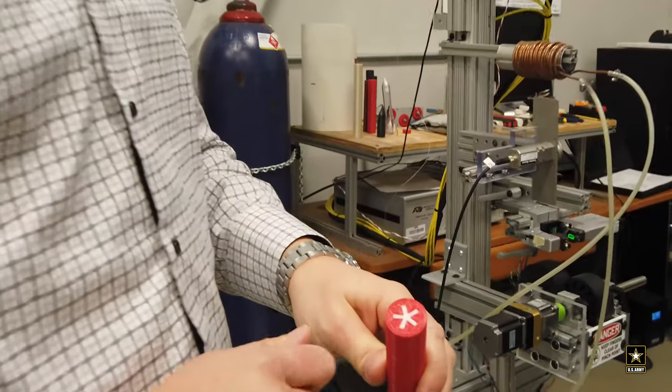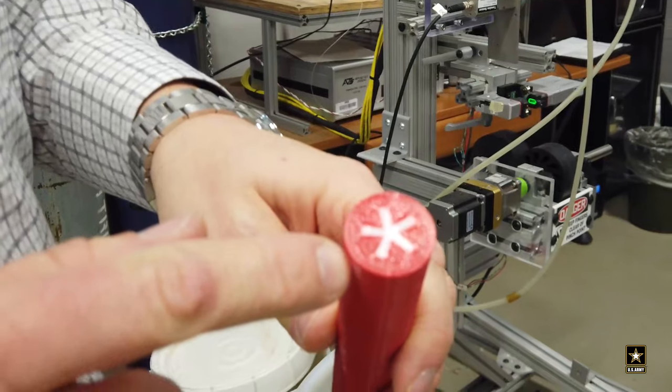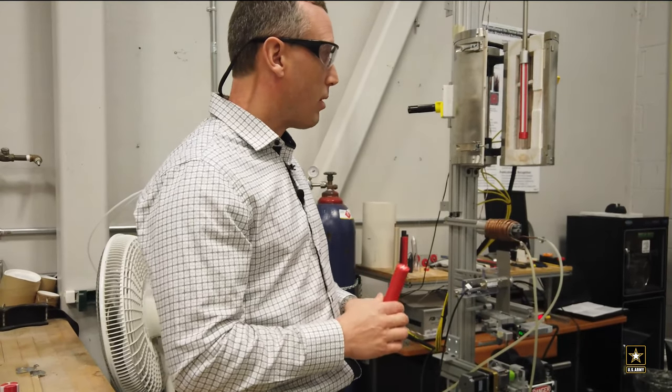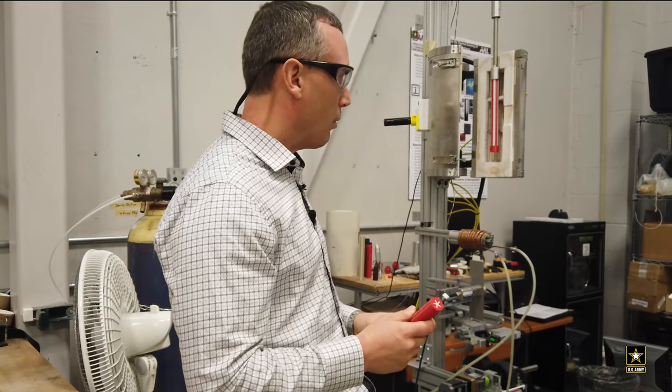What we've done is we've combined two different polymers together into a single filament, and each of those polymers has unique characteristics that are useful for printing and building strength. What we do is we first create, on a 3D printer, this solid body here, which is called a preform.